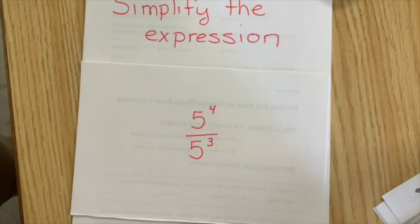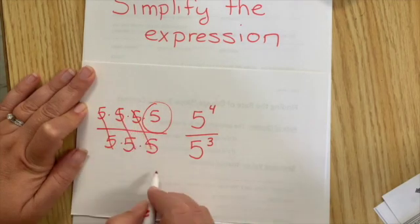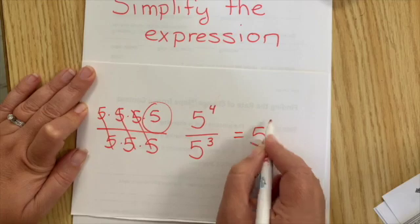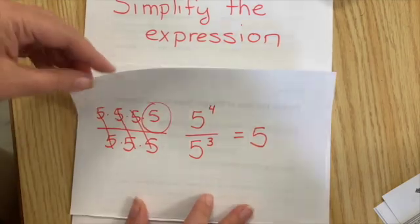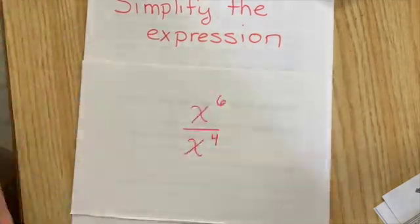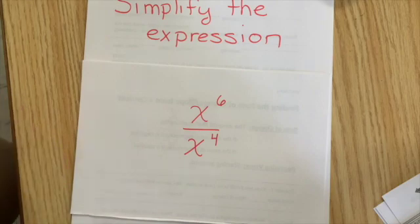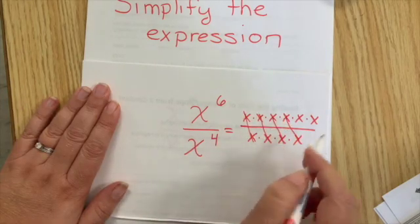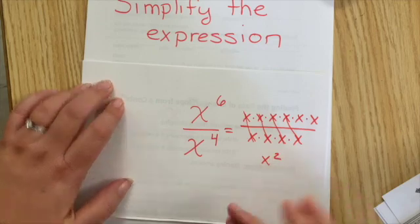Try this one. I'm left with just five. We could write to the one, but we really don't need to. Try this one. Cross them out. We're left with x squared.